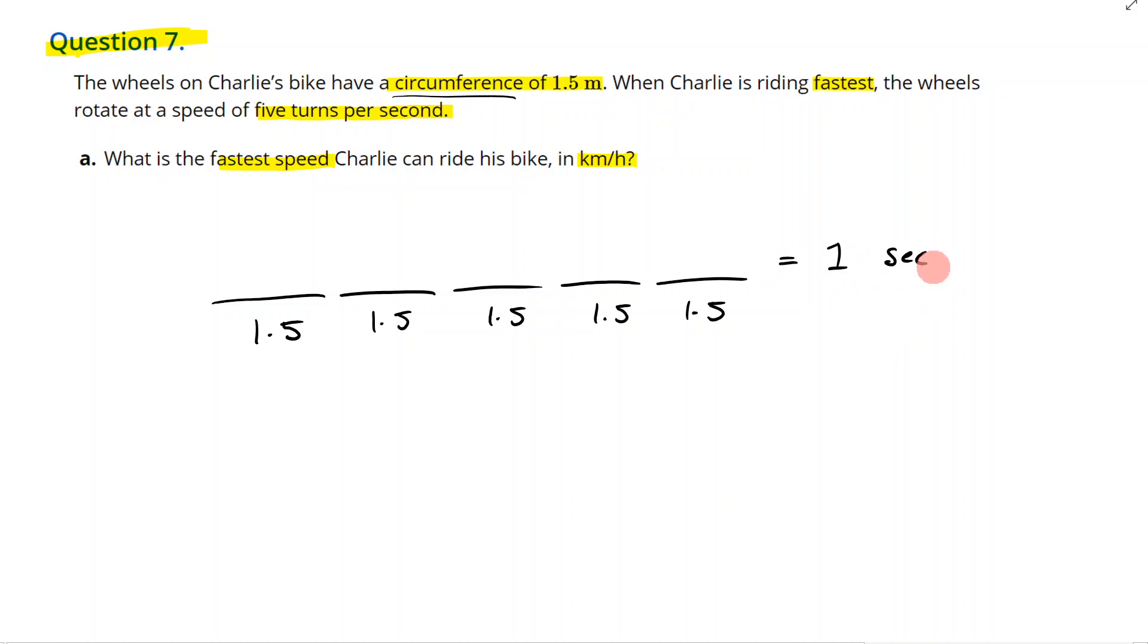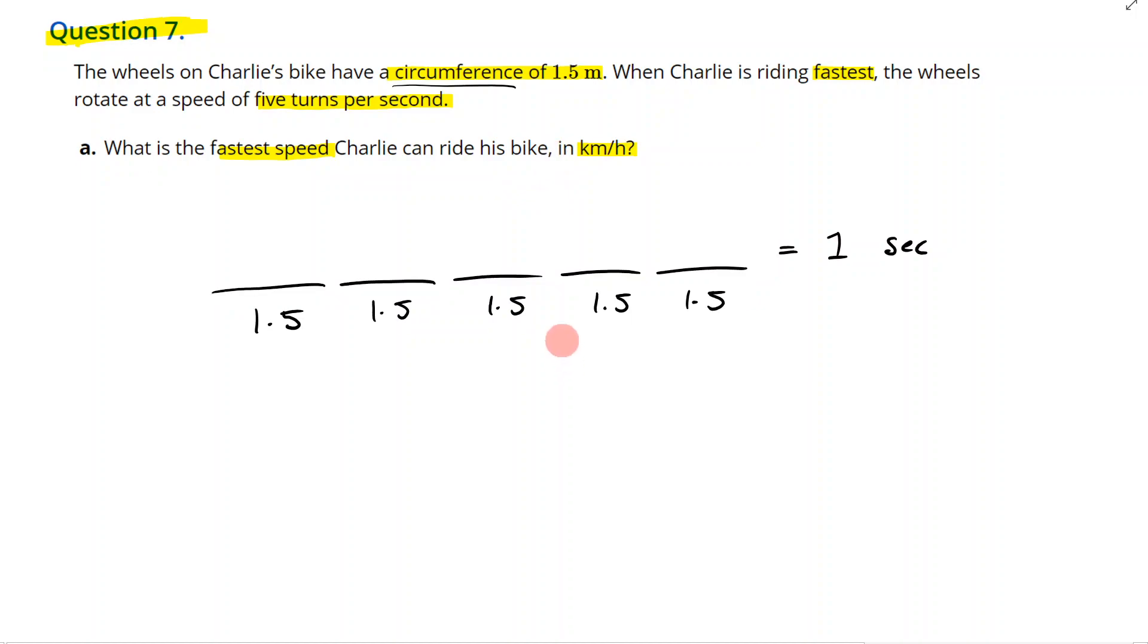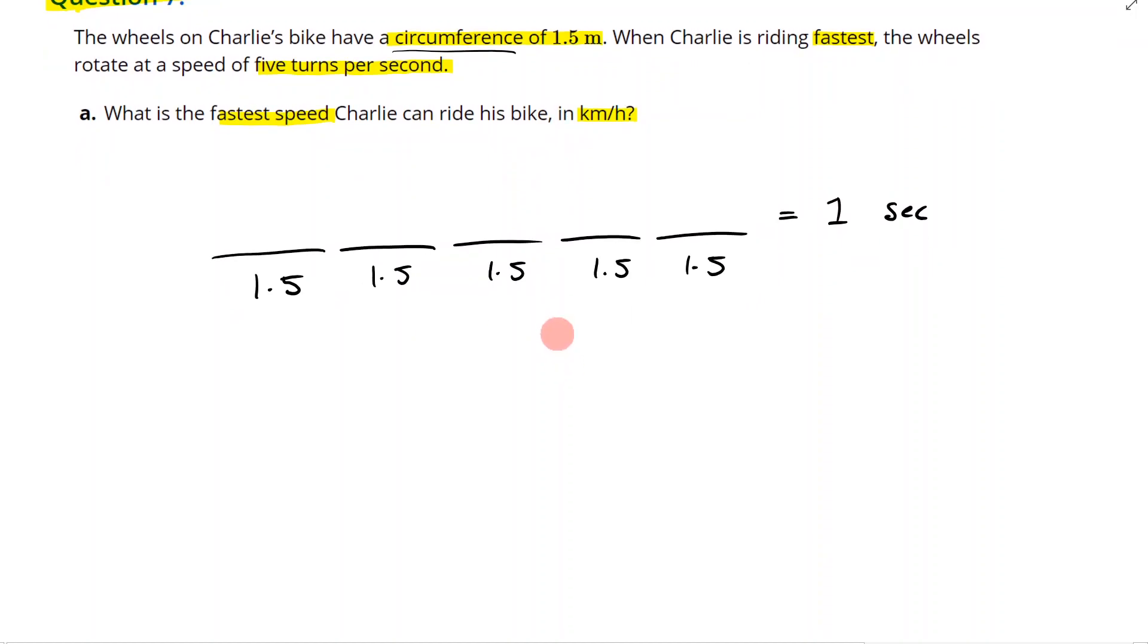Now when it says what is the fastest speed Charlie can ride his bike at, well the maths behind what we're doing is it's going to be 1.5 times 5 to get the distance in which he's traveling. So if I was to go 1.5 times 5, I'm going to get 7.5 meters. So he moves 7.5 meters in one second—that's what we know. He can travel 7.5 meters in one second when he's going his fastest.